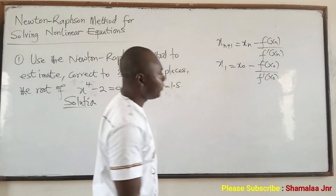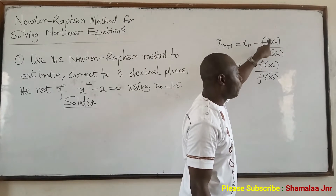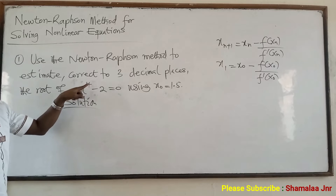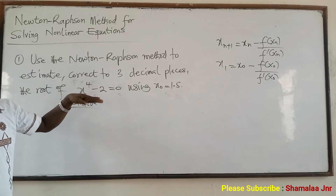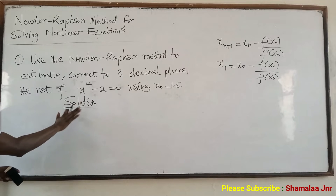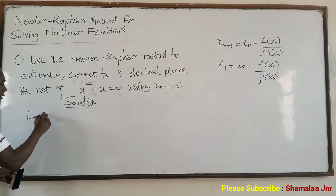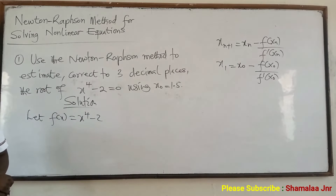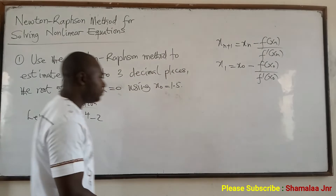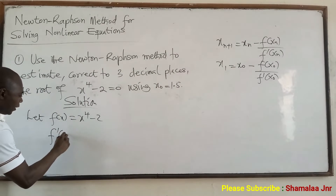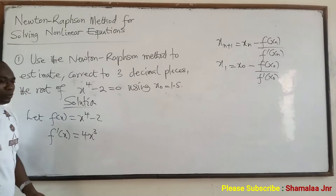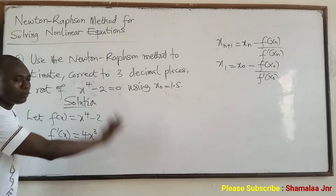Now, if you look at the formula we are going to use, you should have a function, and then when you get a function you differentiate it. This is a non-linear equation because the power of X is 4. If the power is more than 1 — if it is 2, 3, 4, and so on — it is non-linear. So this is an equation; you have to make it a function. Let F of X be equal to X to the power of 4 minus 2. Now, because of this, you have to differentiate the function. F prime of X is equal to 4X cubed. And we've been given x0 equal to 1.5.